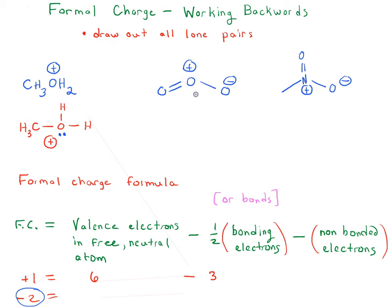In this middle example here of ozone, we've already got the oxygens all drawn out. The oxygen on the far left is neutral — it's going to have a total of eight electrons. You can see that it has two, four, six, eight electrons around it. Now this oxygen, as drawn, has a positive charge, so it has two, four, six electrons — so it doesn't actually have a full octet.